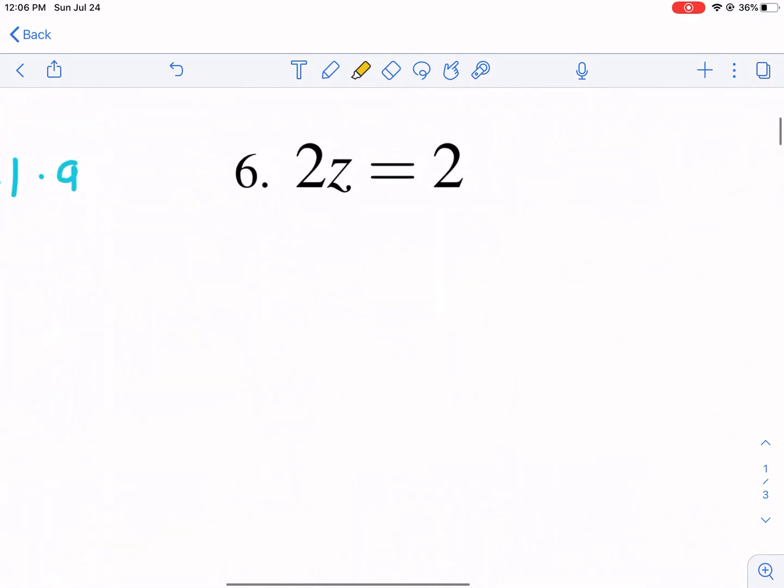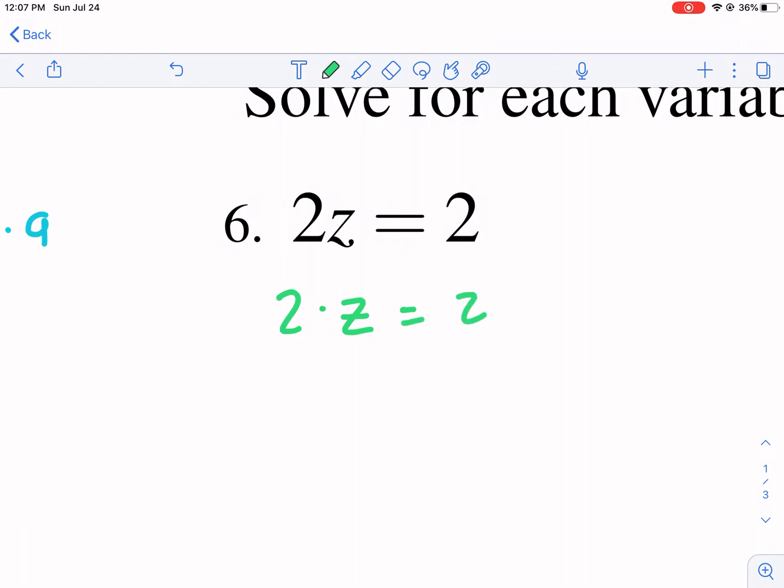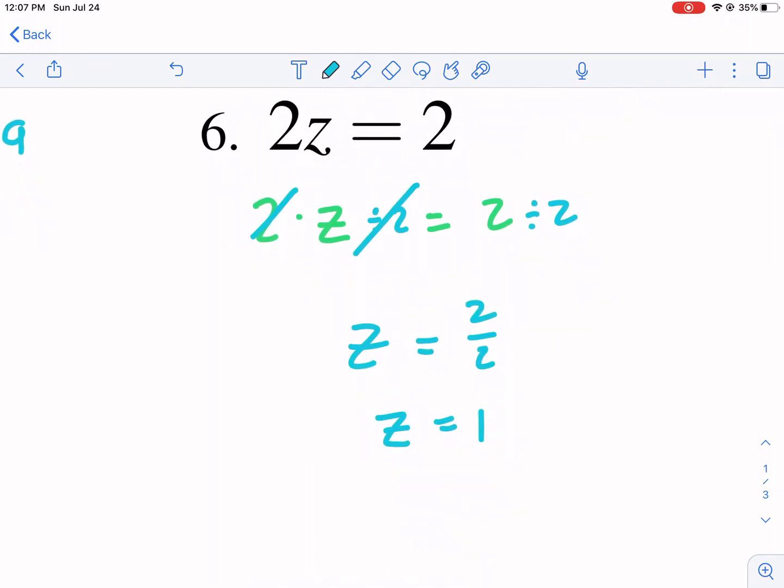Let's jump to number 6. If we have 2z, what that means is 2 times z. Now how do you undo times? If we have z times 2, what do we need to do? We would need to divide. Dividing is the opposite of multiplication. So we would need to divide by 2 to both sides. This 2 divided by 2, that's 1. The easiest way to think of it is it just cancels it out. So we have just z on the left side, and now we have 2 divided by 2. It's z equals 1. And that's it.